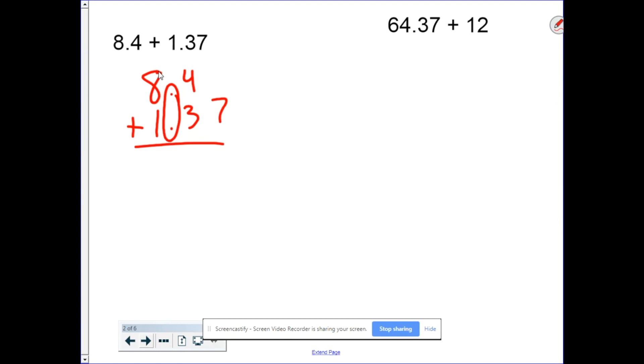Next, I need to fill in the gap. This is what I was talking about. Right here is a gap. There's a 7 down here, but nothing above it. So we put a zero in as a placeholder. Now we can add like normal. 0 plus 7 is 7. 4 plus 3 is 7. And 8 plus 1 is 9. 9.77.